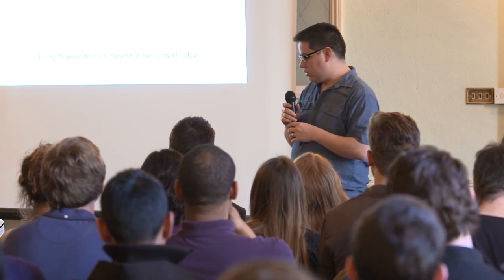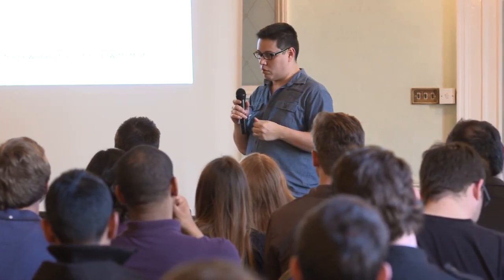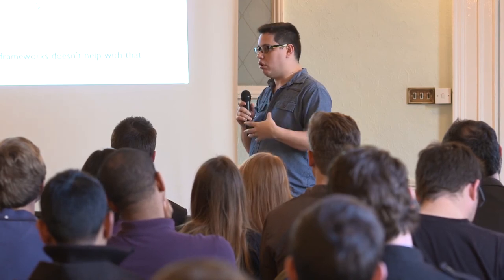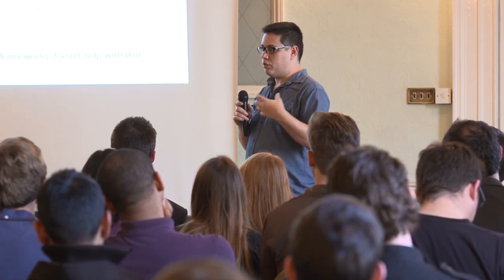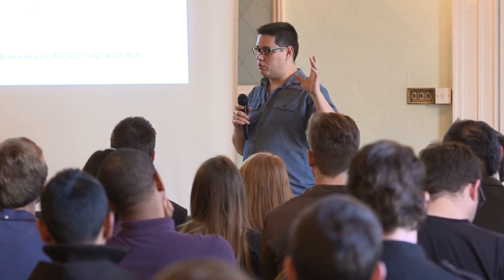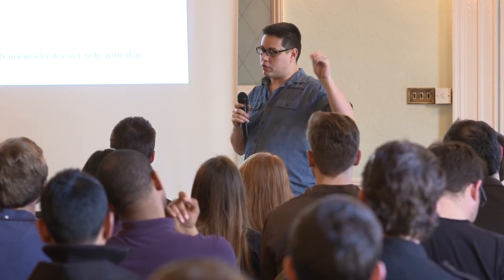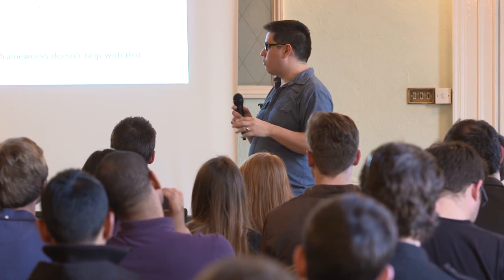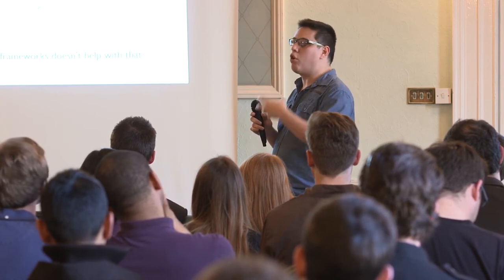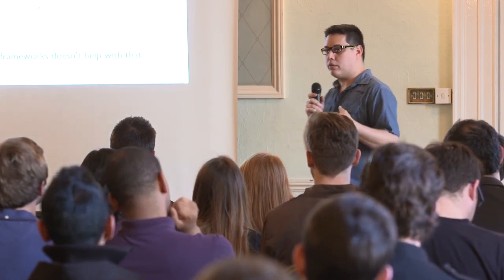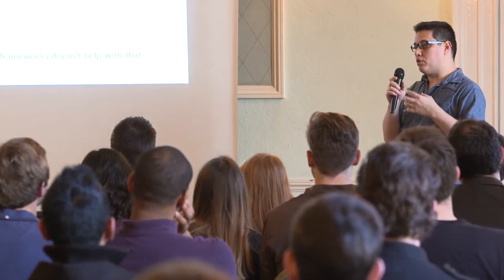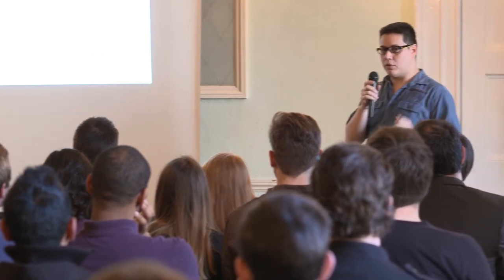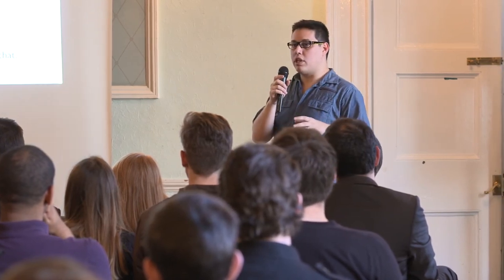The next section is about control. We need to have control over our code. When you use a framework that you don't know who wrote it and you don't know why they named their classes the way they did, you don't have control over it. When you work in a team — or even more, when you lead a team of developers — you have to be able to answer their questions, be challenged about the code, and make changes when needed. To be able to do that, you have to know your code.